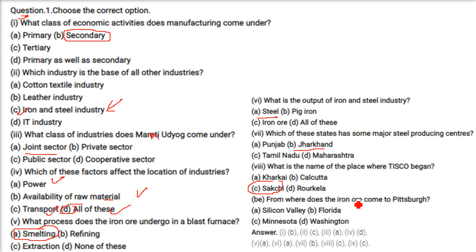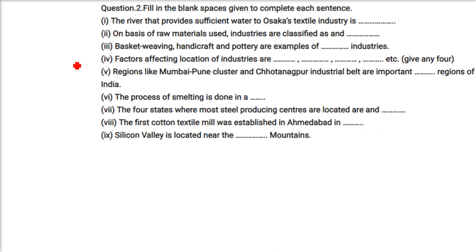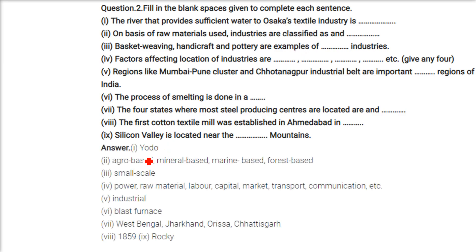From where does iron ore come to Pittsburgh? It comes from Minnesota to Pittsburgh. The river that provides sufficient water to Osaka's textile industry is the Yodo River. On the basis of raw materials used, industries are classified as agro-based, mineral-based, marine-based, and forest-based.